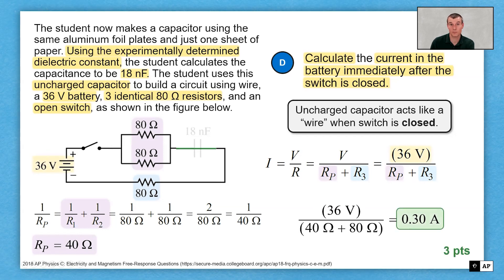My three points for this one are probably going to be for recognizing when the current's initially closed, having that be zero, for solving for my equivalent resistance, for maybe getting the answer and or solving with Ohm's law.